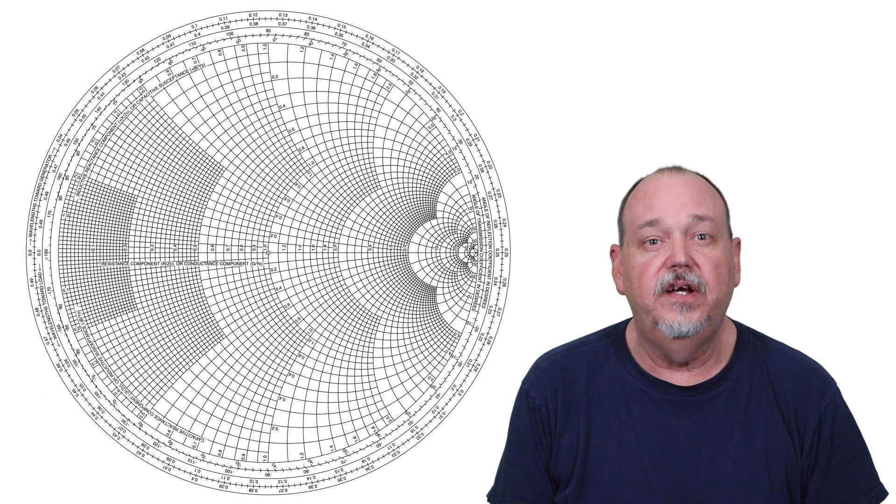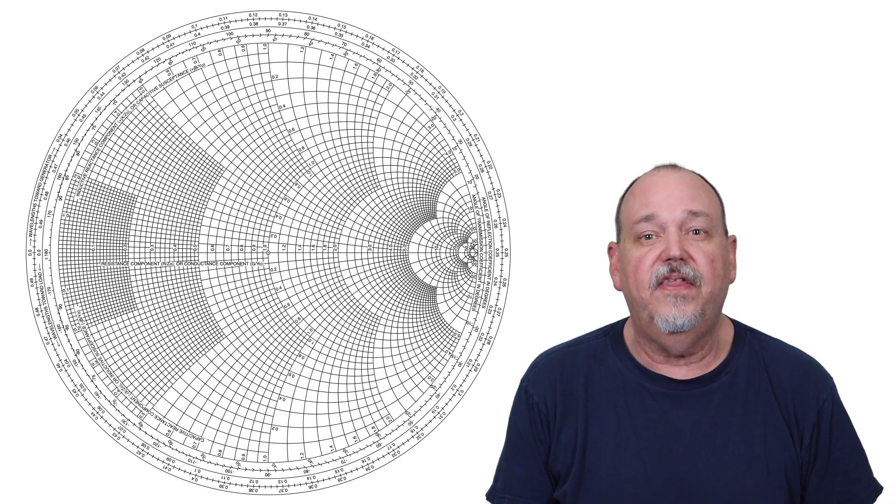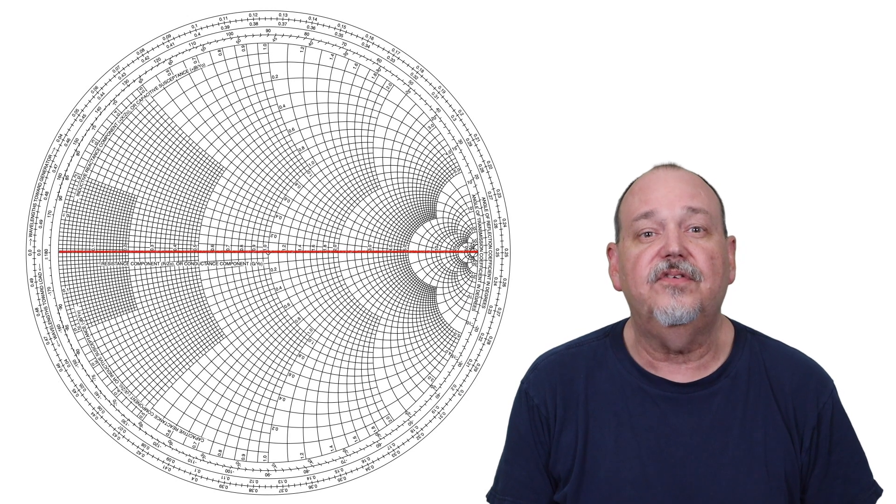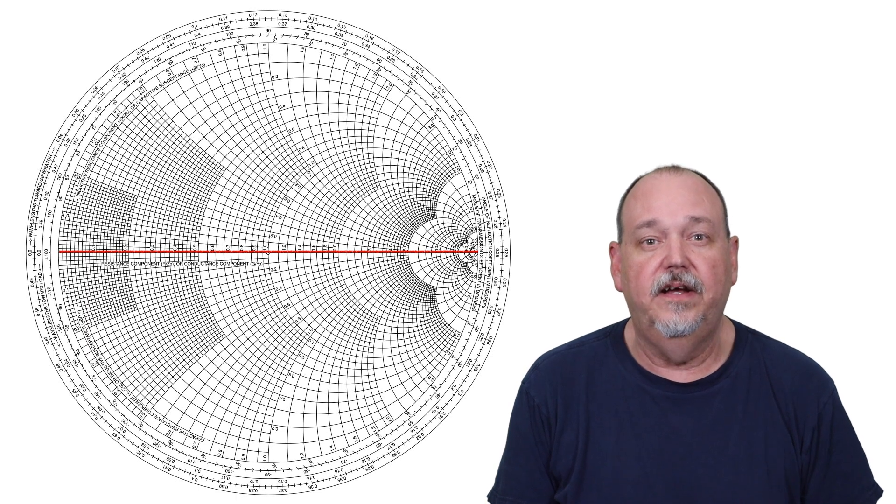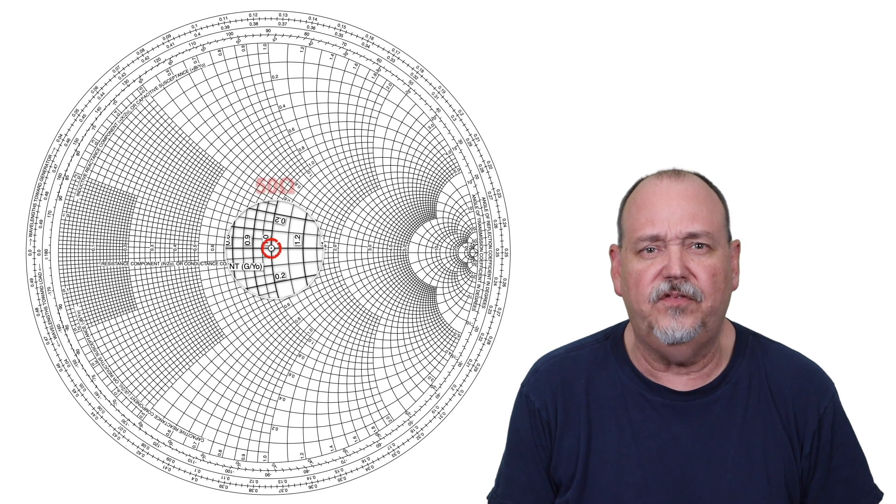Okay, on to the Smith chart. If you look at the chart, you notice that it is a big circle that is divided horizontally with this line. This line is the pure resistance line, and the spot denoted with a 1.0 is known as the prime center. We normalize this to our system impedance, which is typically 50 ohms.